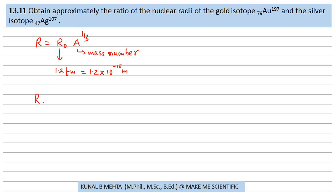So, radius of the gold nuclei to that of the radius of the silver nuclei, that is equal to R0 mass number for gold is 197 raised to 1 by 3 upon R0 mass number of silver is 107 raised to 1 by 3.